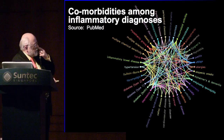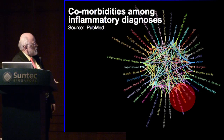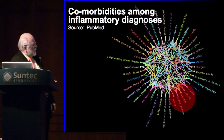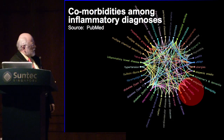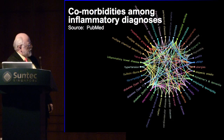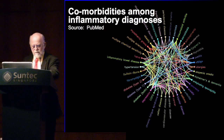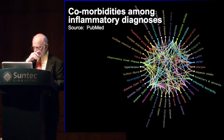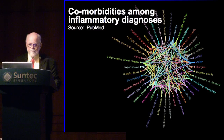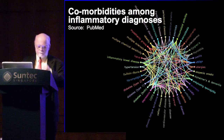We have also added non-autoimmune diseases — asthma, anorexia, anxiety, bipolar, cancer, and some of the other chronic diseases that are commonly associated with autoimmune diagnoses.